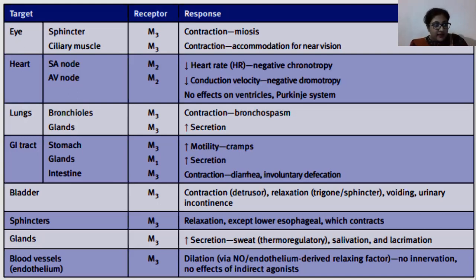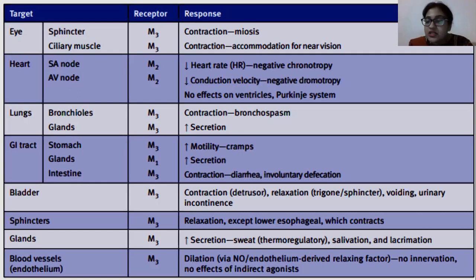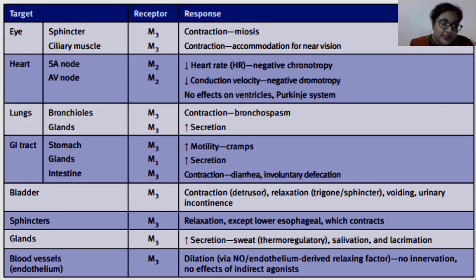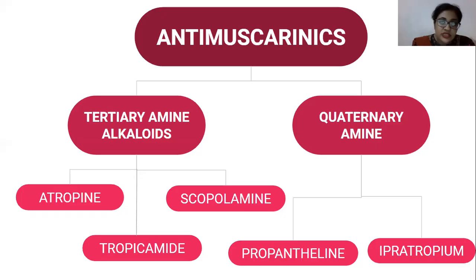For glands, muscarinic increases secretion of sweat, salivation, and lacrimation. Anti-muscarinic drugs produce much less sweat, less salivation, and less lacrimation. For blood vessels, muscarinic causes dilation, so the antagonist effect would be different.